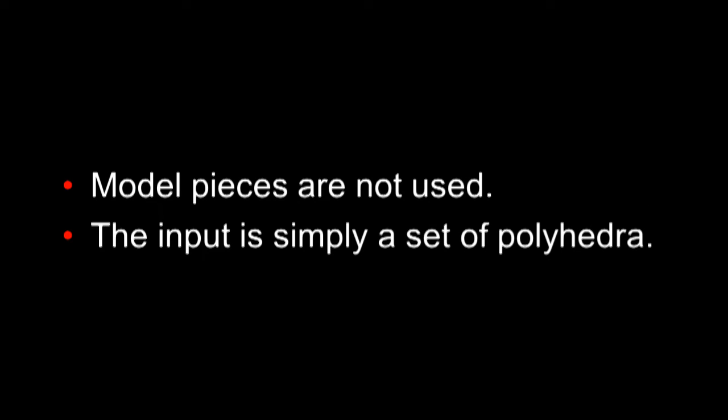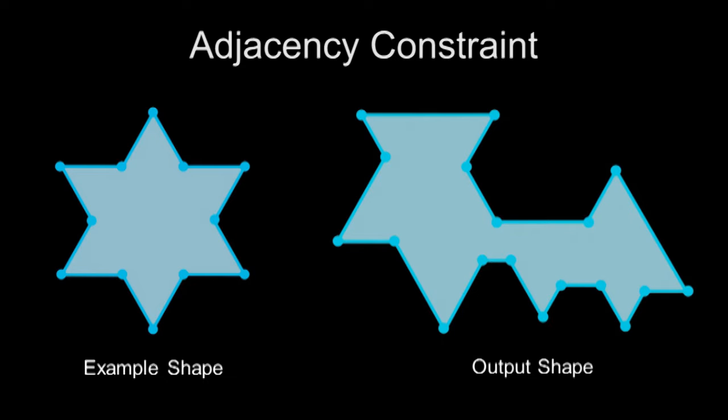We're going to look at a new approach where we're not going to split the shape into tiles. The input will just be a 3D mesh or a 2D polygon. And we're going to define the adjacency constraint a little differently. What we do is we're going to try to make every small neighborhood in the output look like some neighborhood in the input.